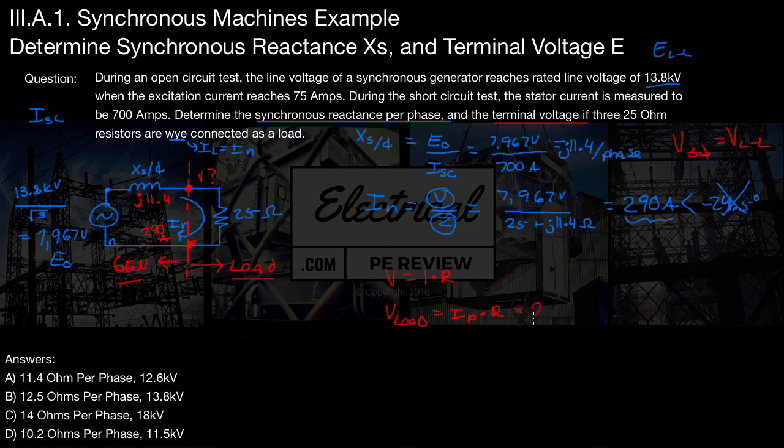This is going to be our magnitude that we found of 290 amps times our load resistor impedance, which is 25 ohms. So we plug that in and we've got V load equals 7,250 volts.